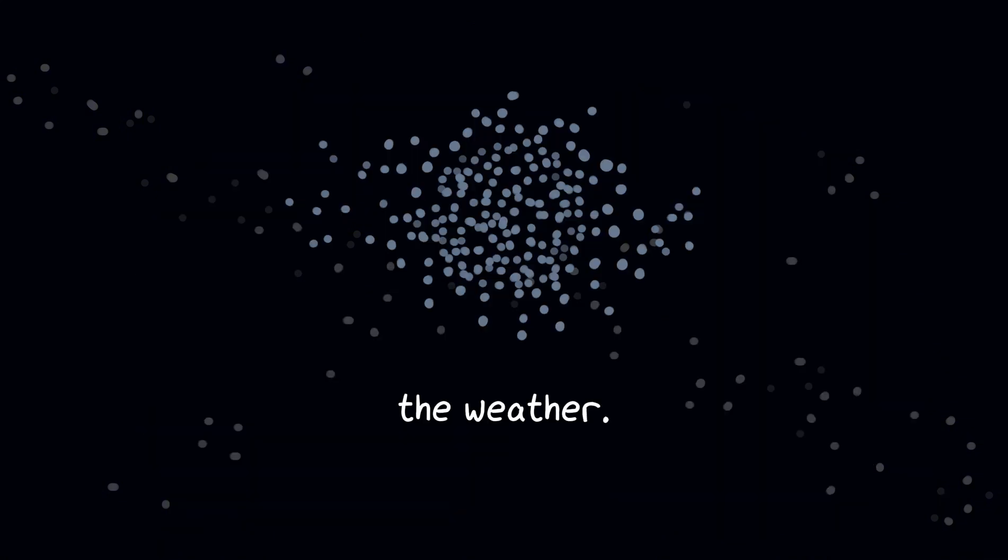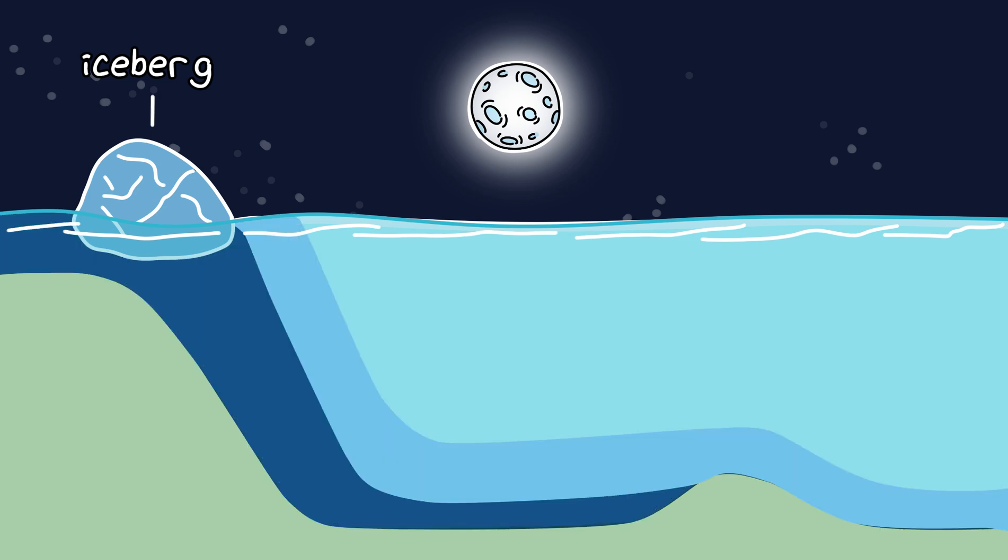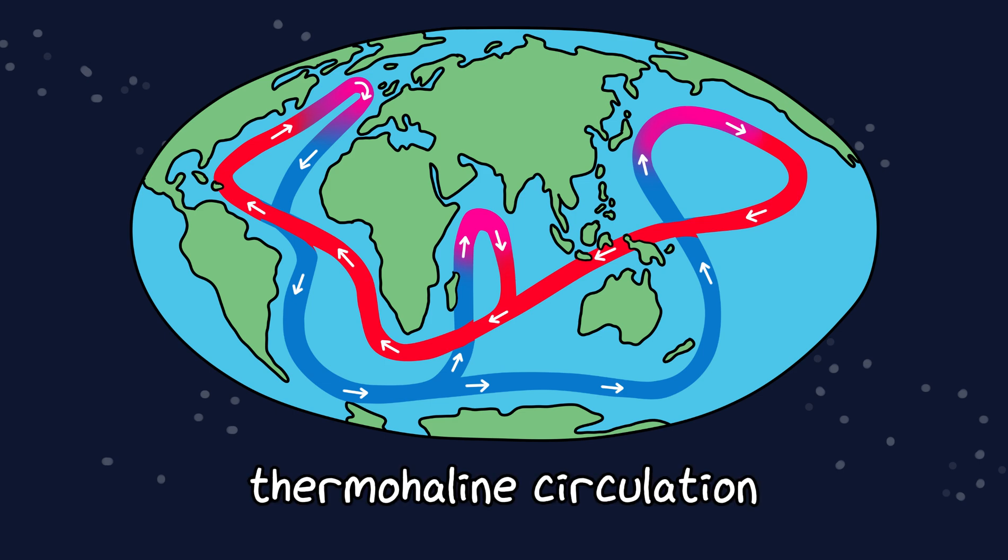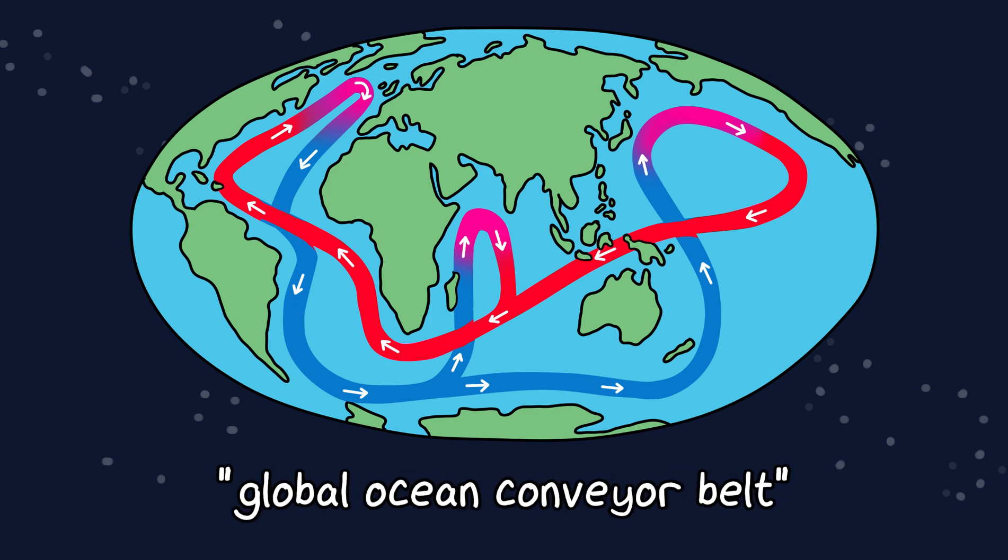Now the weather. The moon helps drive tidal currents which mix warm and cold waters in the ocean. This helps regulate the thermohaline circulation, the global ocean conveyor belt. That's what keeps our global climate in check.